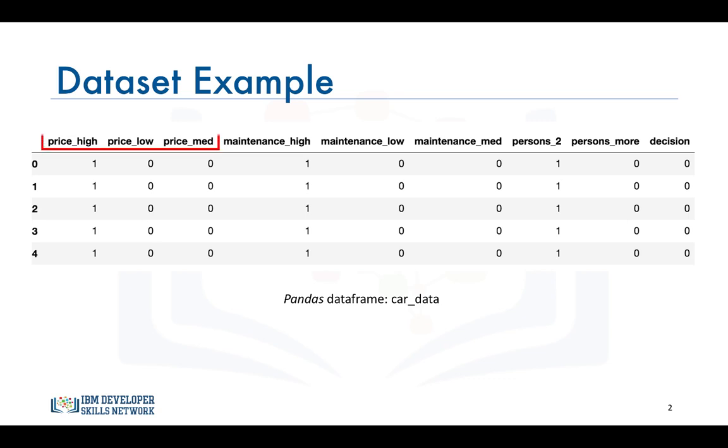So the price of the car can be either high, medium, or low. Similarly the cost of maintaining the car can also be high, medium, or low and the car can either fit two people or more.